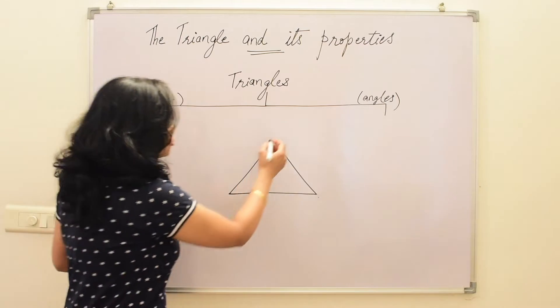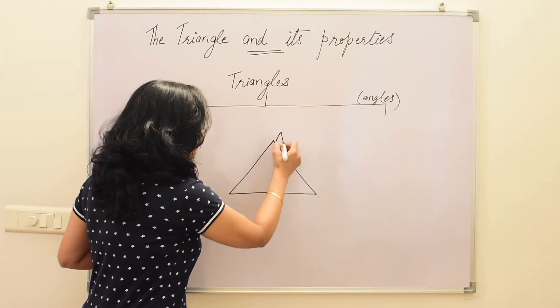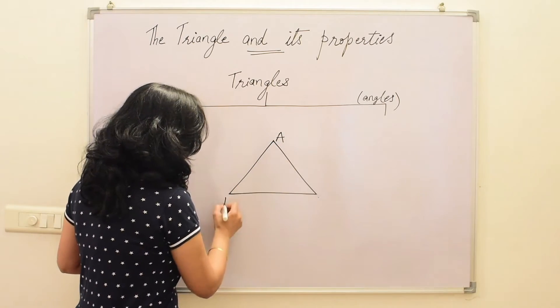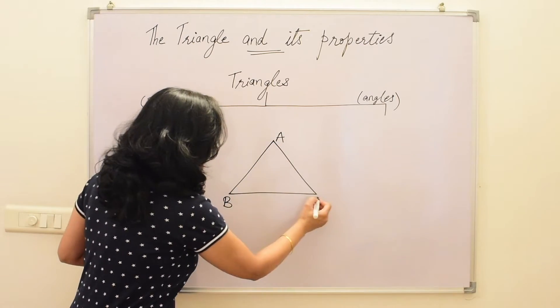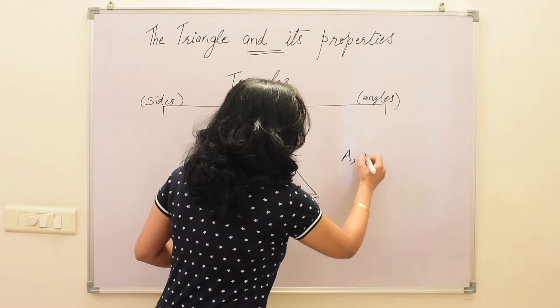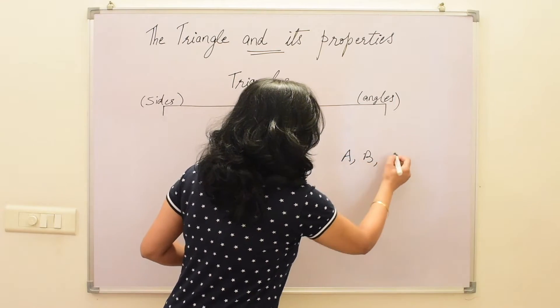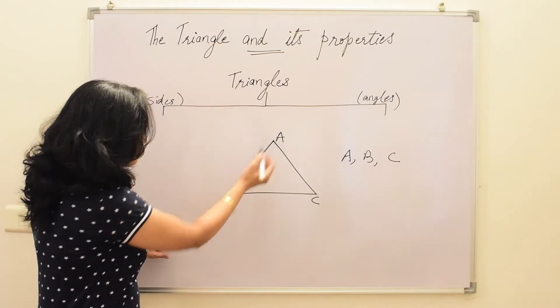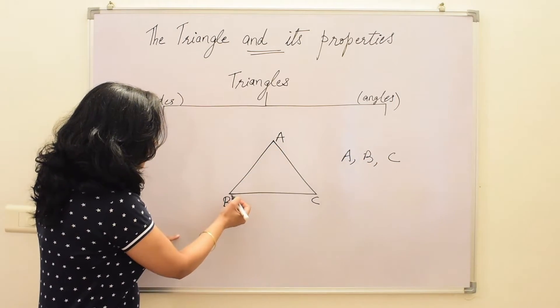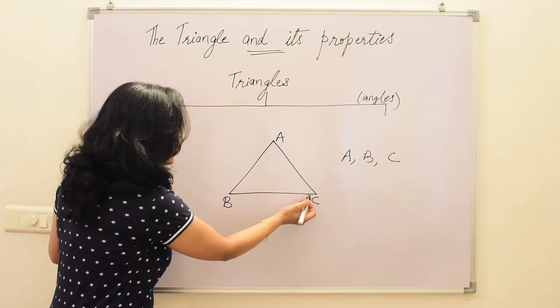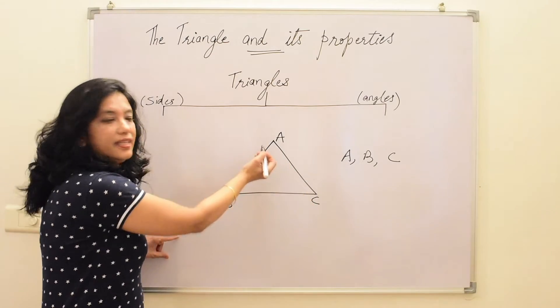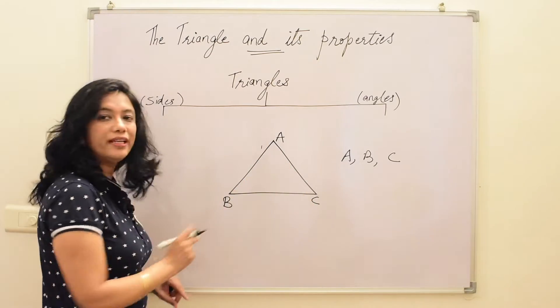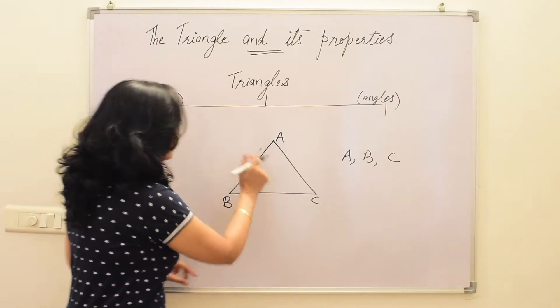A triangle has three vertices: A, B, and C. It also has three line segments: AB, BC, and CA.